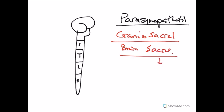Sacrally, this comes from S2 to S4. From the brain, it's cranial nerve number 3, 7, 9, and 10. Cranial nerves 3, 7, 9, and 10 — that is: number 3 oculomotor, 7 facial, 9 glossopharyngeal, and 10 vagus — are all cranial nerves that come off the parasympathetic division.